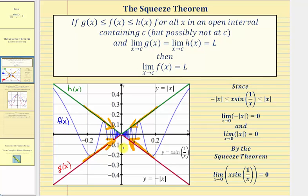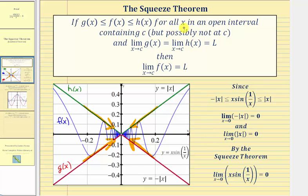So to say this more formally using the squeeze theorem: since x times sine of one divided by x is greater than or equal to the opposite of the opposite of i of x and less than or equal to the opposite of i of x, and the limit as x approaches zero of the opposite of i of x equals zero, by the squeeze theorem it follows that the limit as x approaches zero of x times sine of one divided by x equals zero. This theorem is helpful for proving limits as well as proving some derivative formulas, and therefore we'll see this theorem again. I hope you found this helpful.